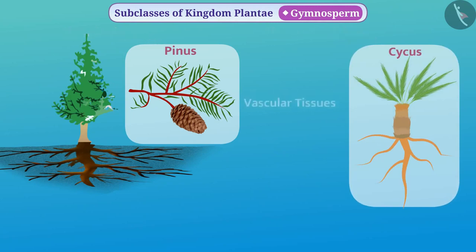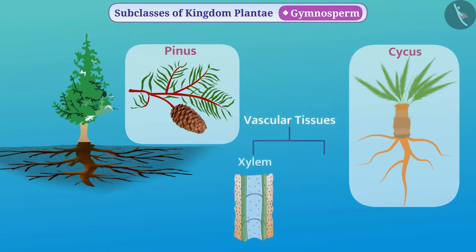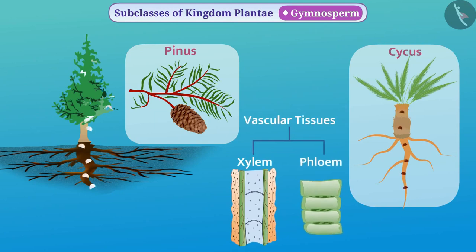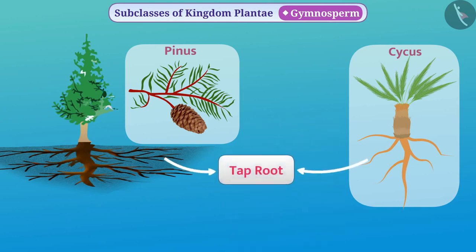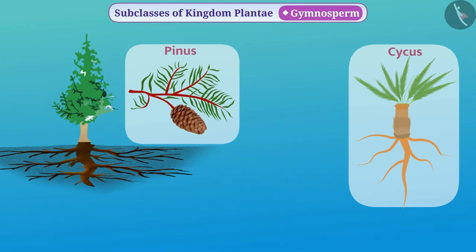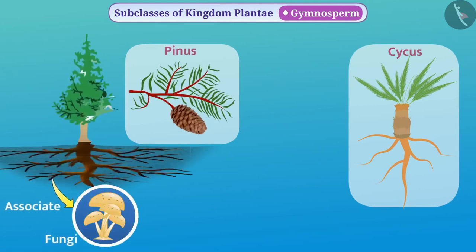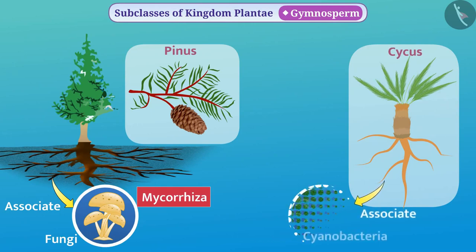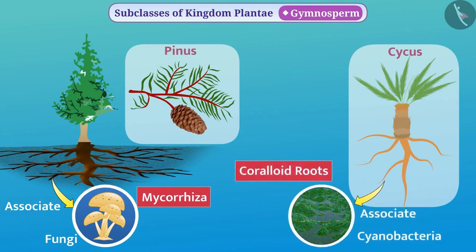They use vascular tissues such as xylem and phloem to transport various substances from one part to another. Mainly they have a tap root system. Some gymnosperms such as pinus associate with fungi called mycorrhiza. Similarly, some gymnosperms such as cycas cooperate with cyanobacteria through coraloid roots.